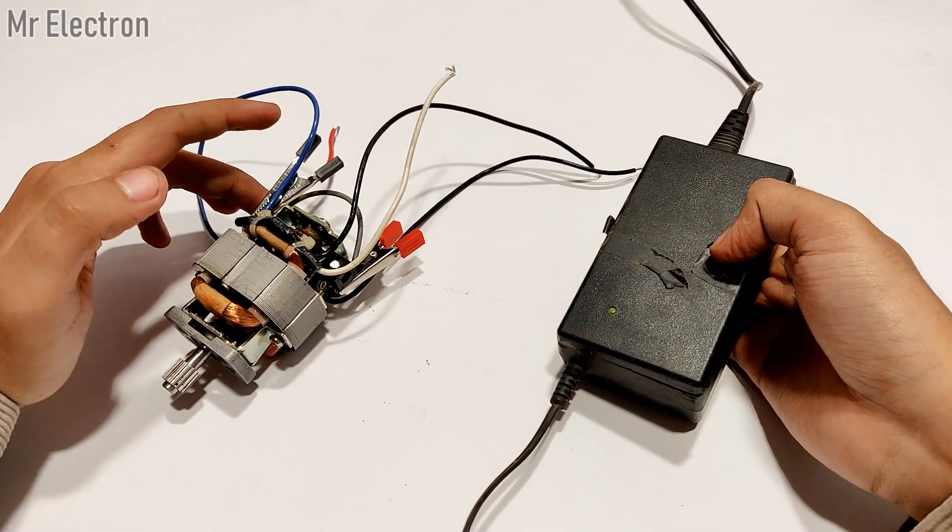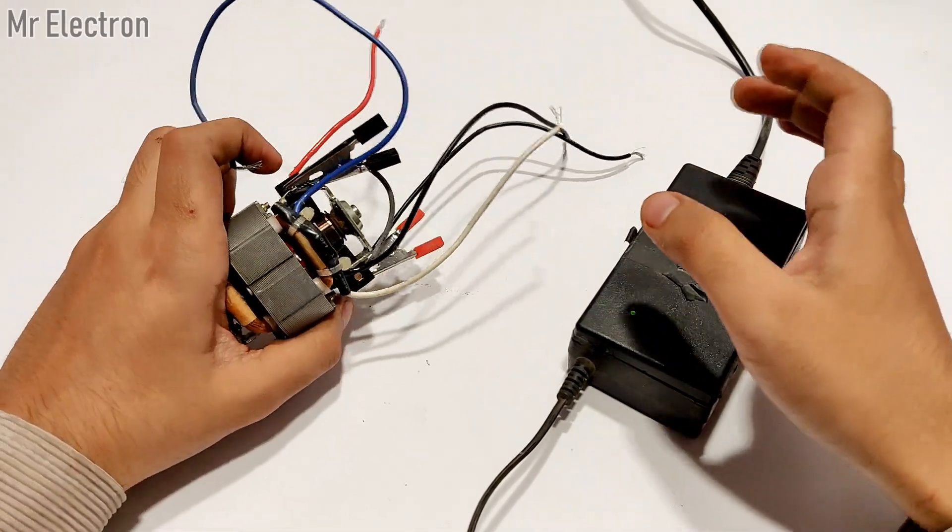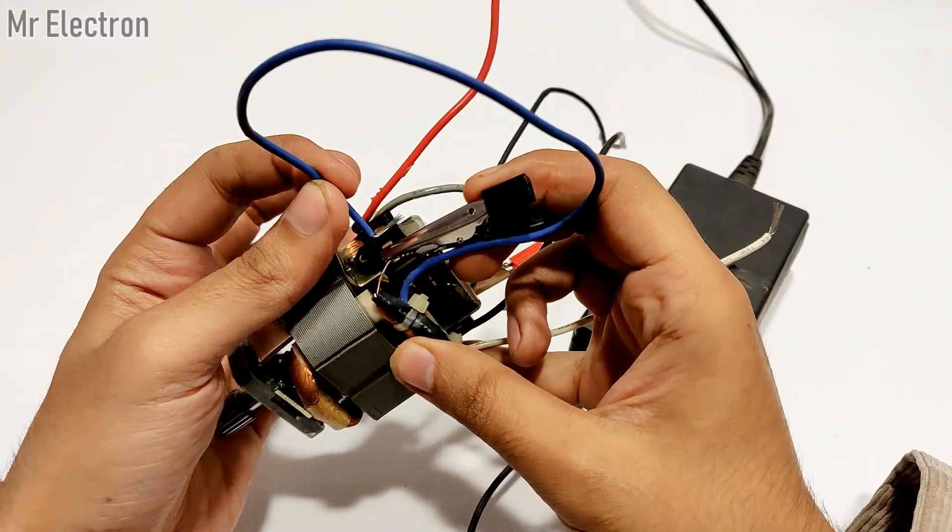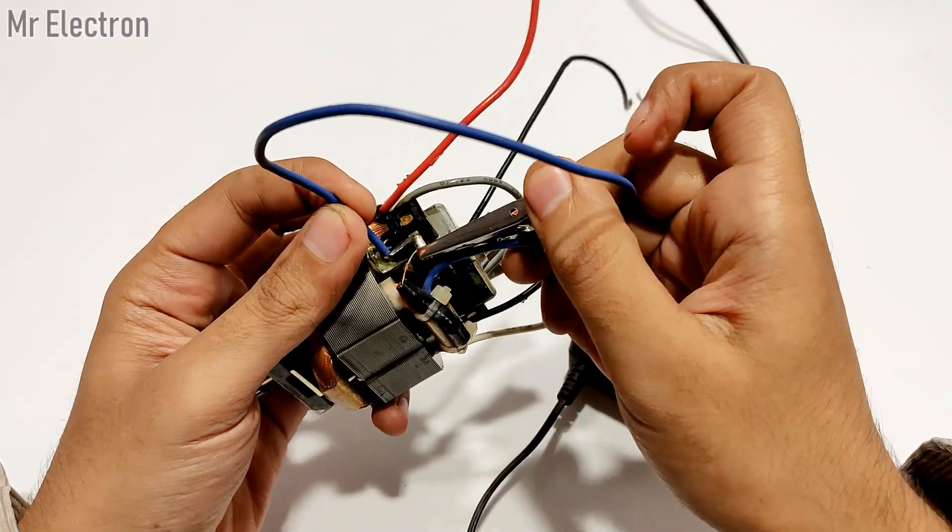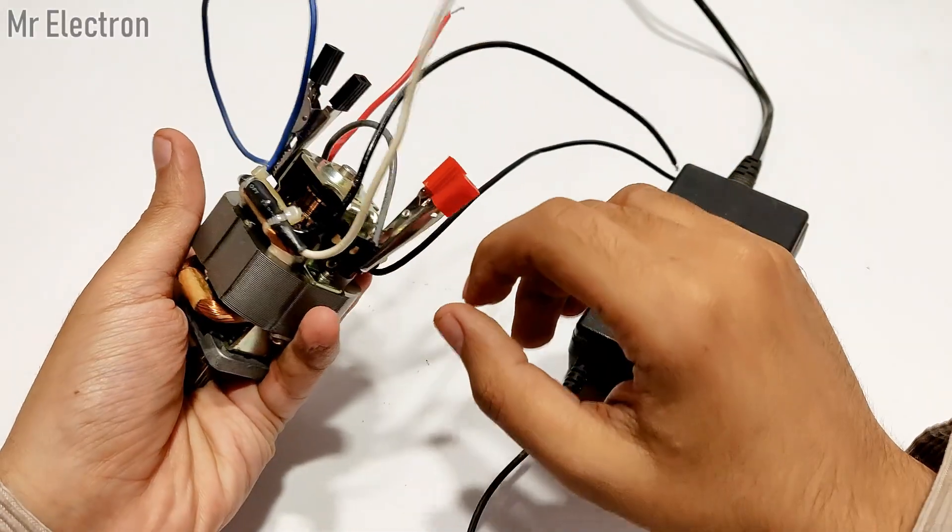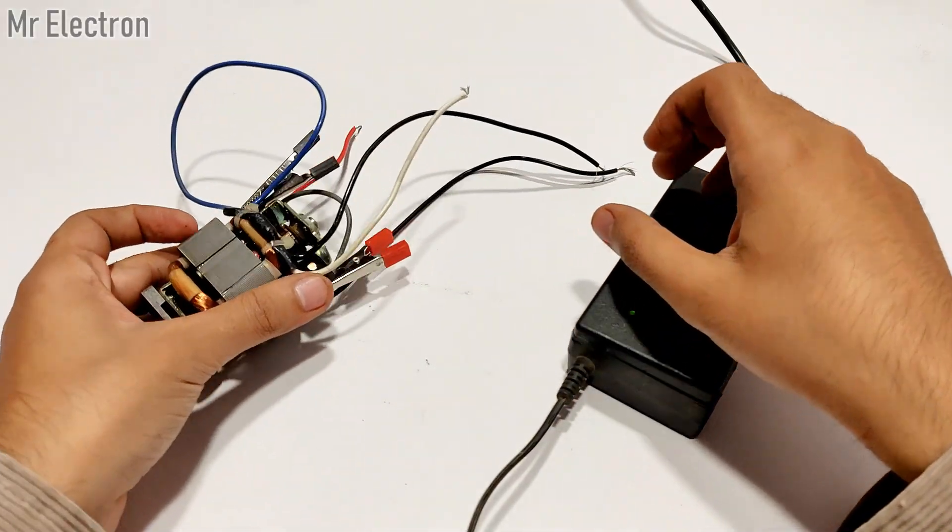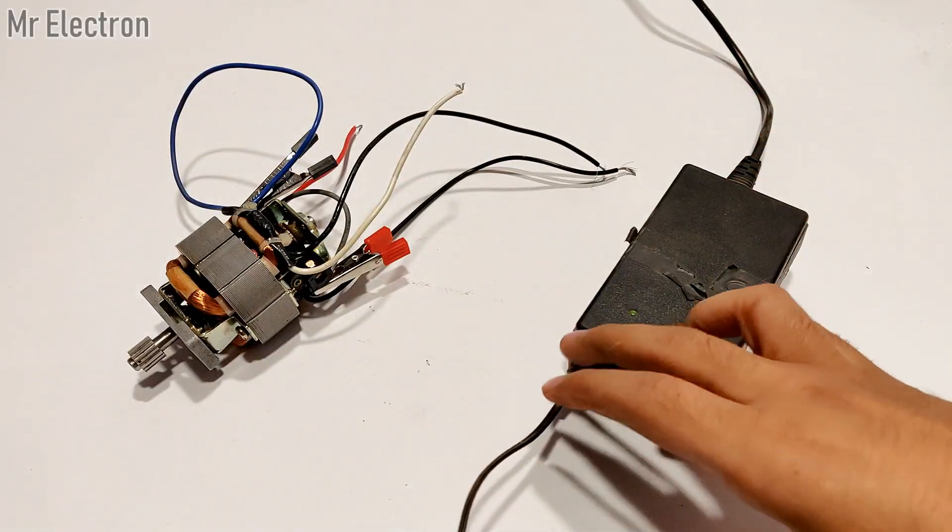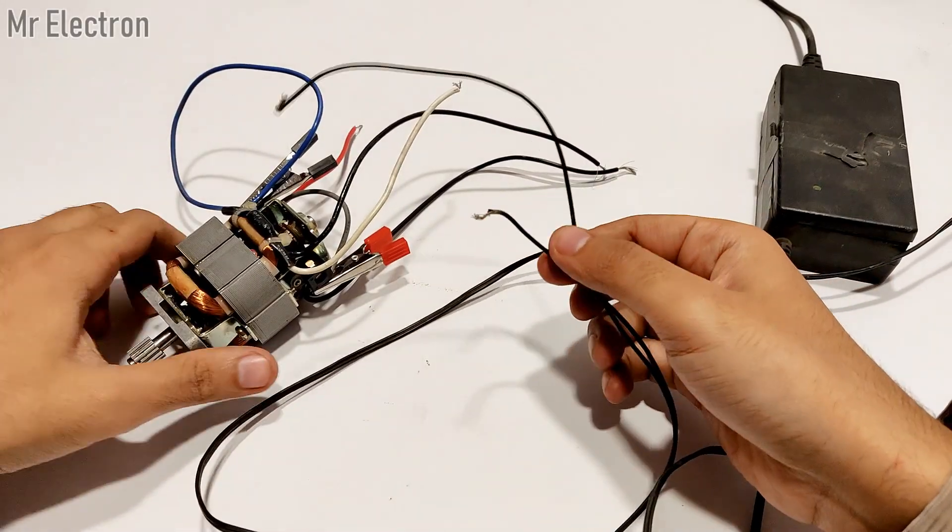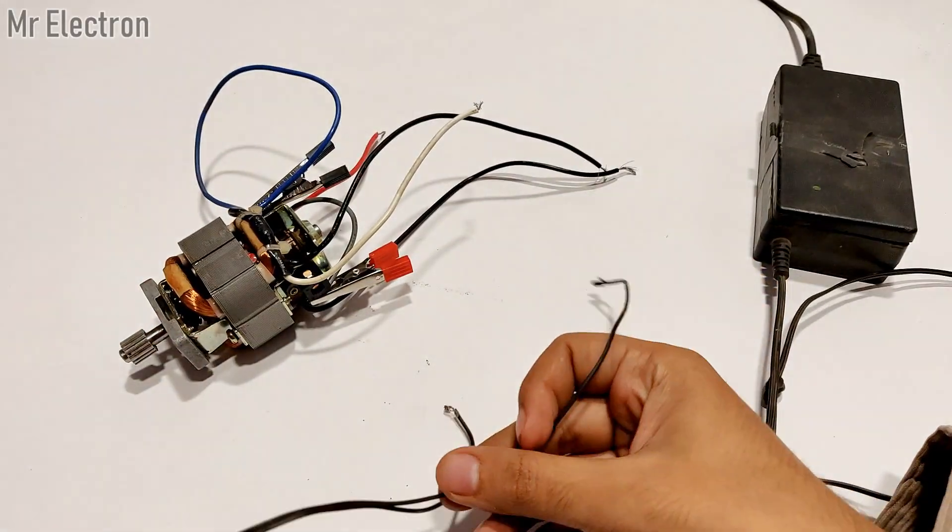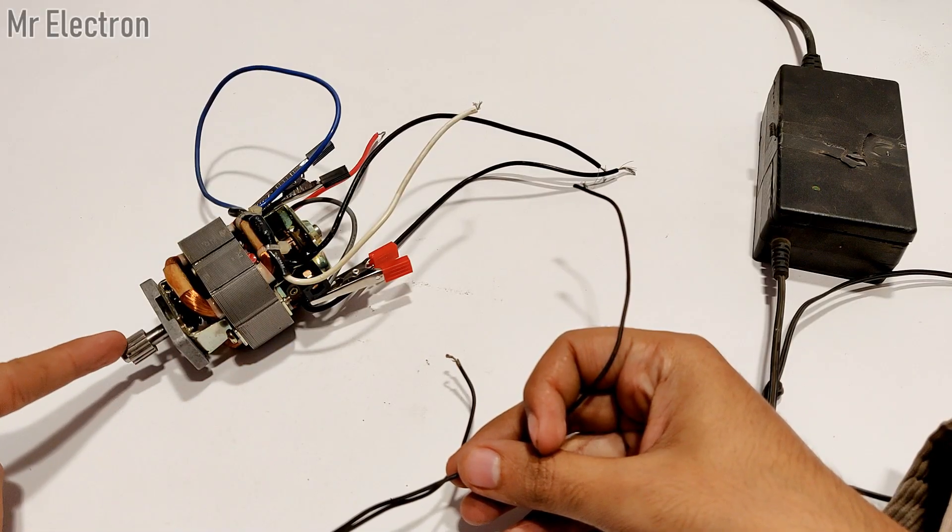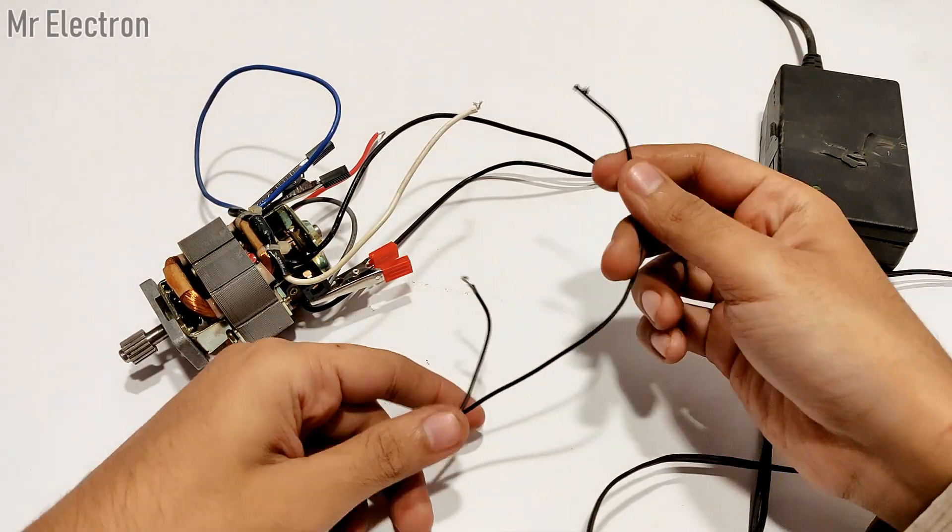Let's hope I've connected it in the correct manner. Now I'm going to give it a 32 volts DC supply. Remember, it is a universal motor, so although it operates on AC, it will also operate on DC.